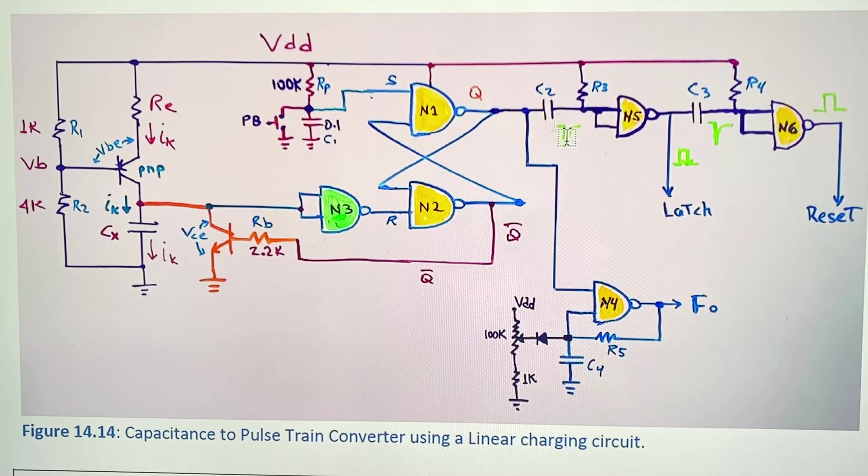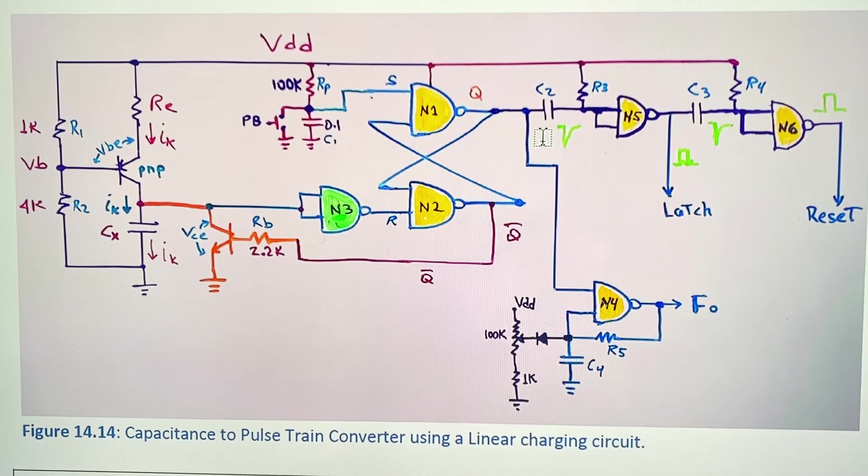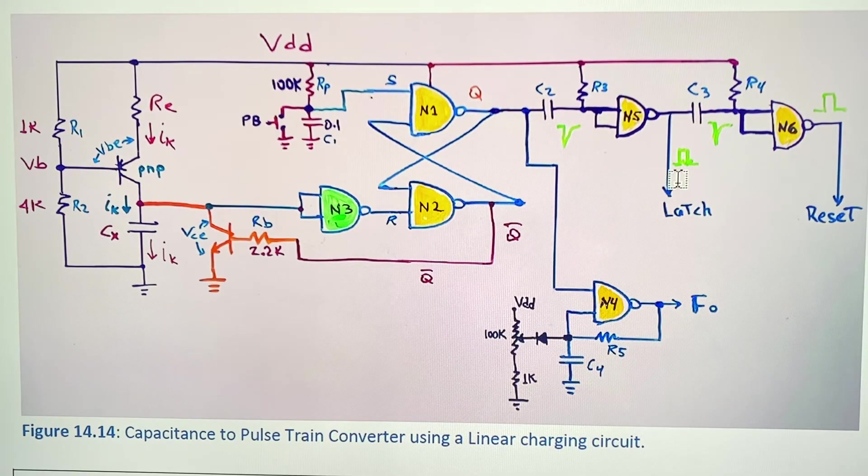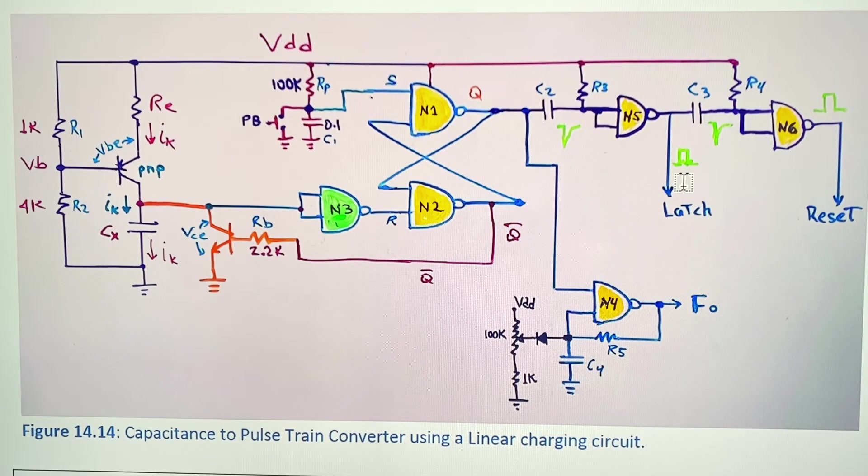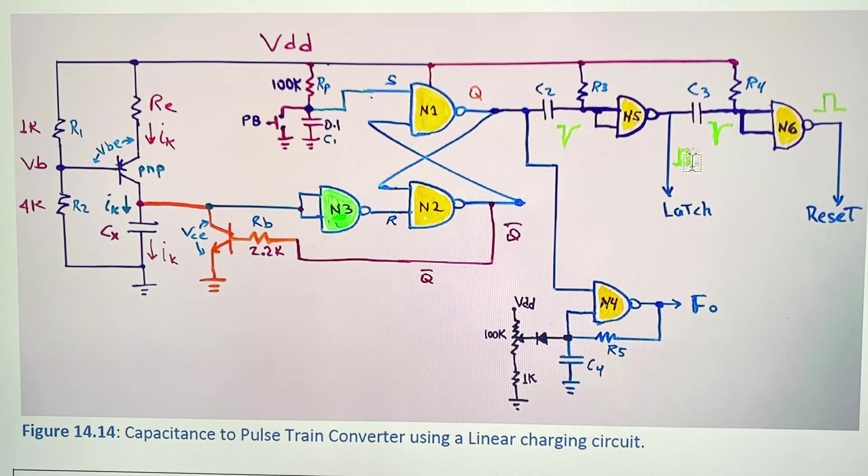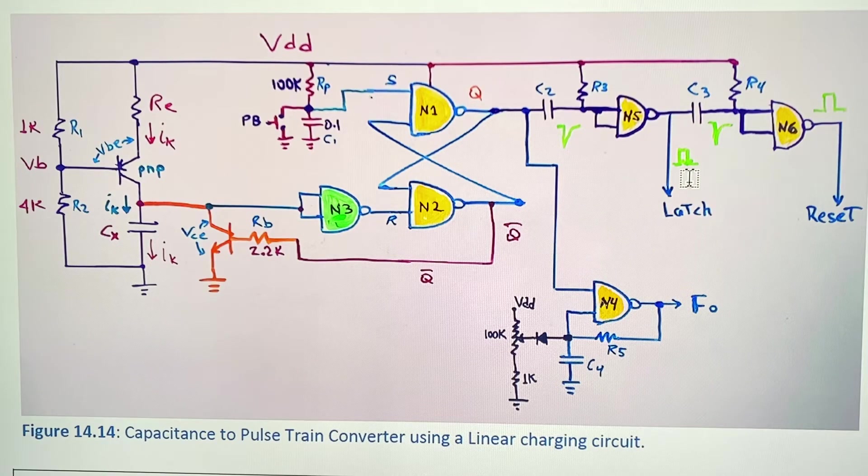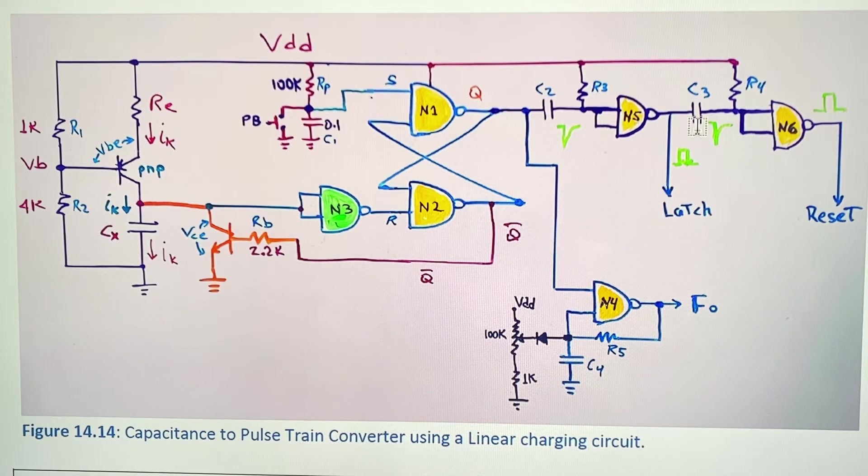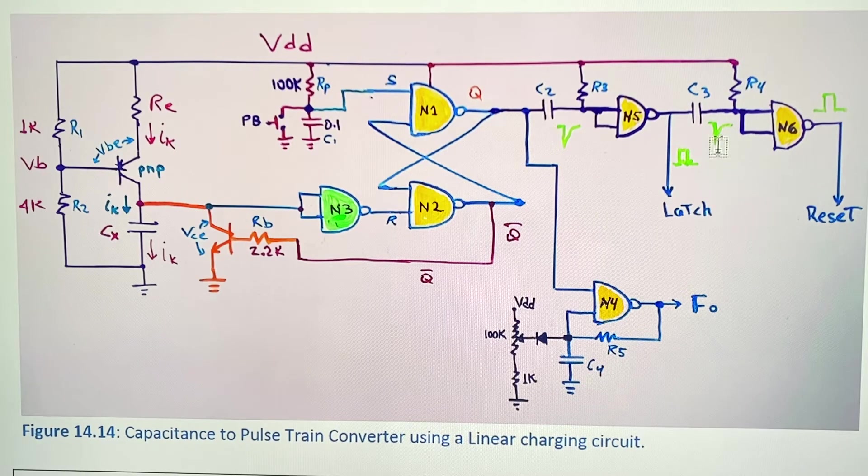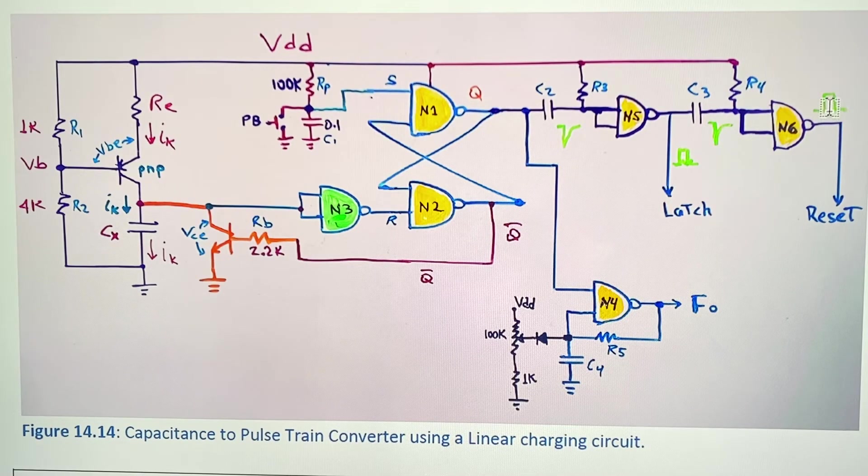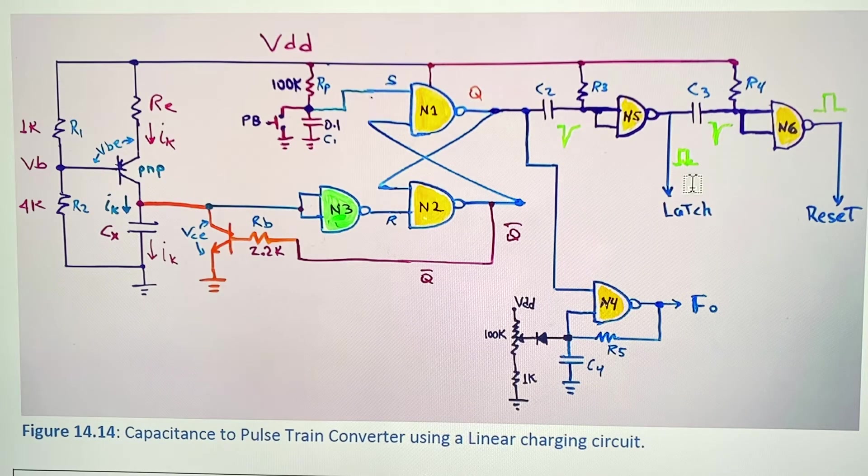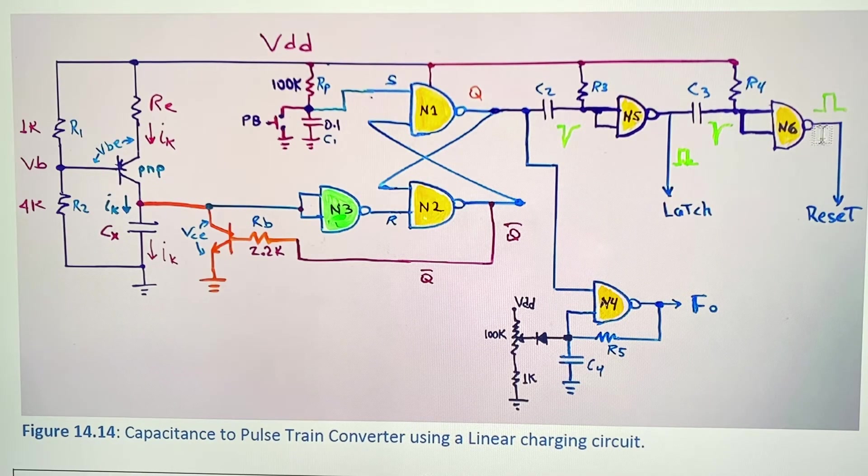After the pulse train is generated, when Q goes low you get this transient pulse in this point which is the voltage across capacitor C2. The NAND gate generates a positive digital pulse.